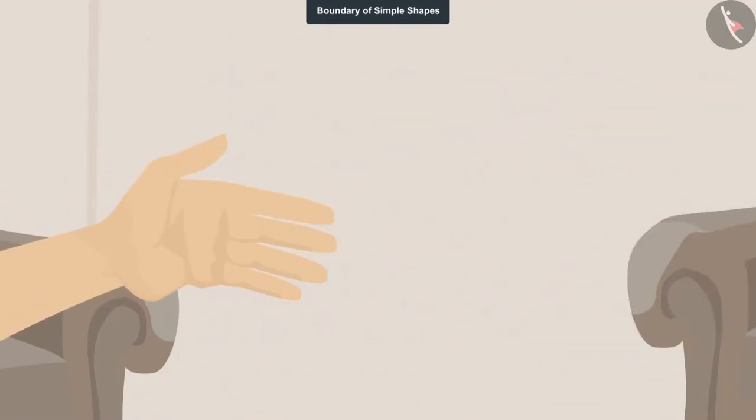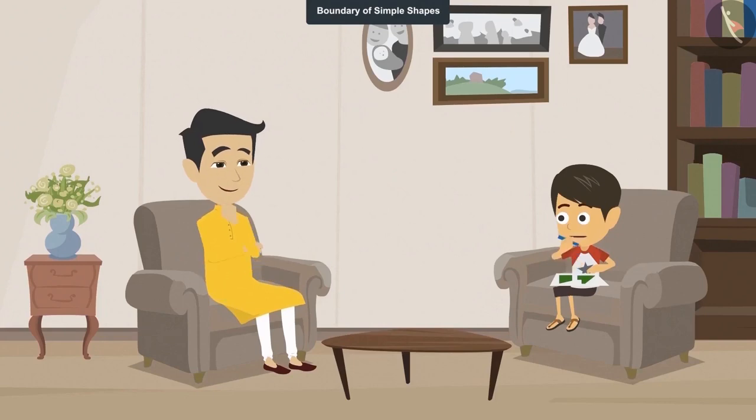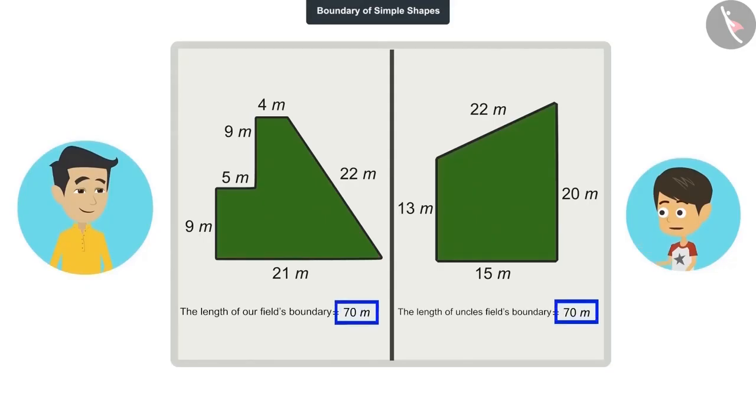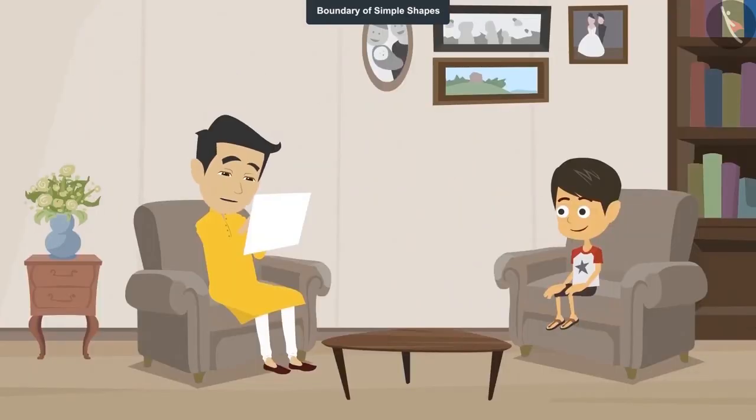Just a minute. What happened? I may have made a mistake in adding. The measurement of the boundaries of uncle's farm seems to be the same. Give it to me. I'll check. No, Rianj. There is no mistake. Your calculation is correct.